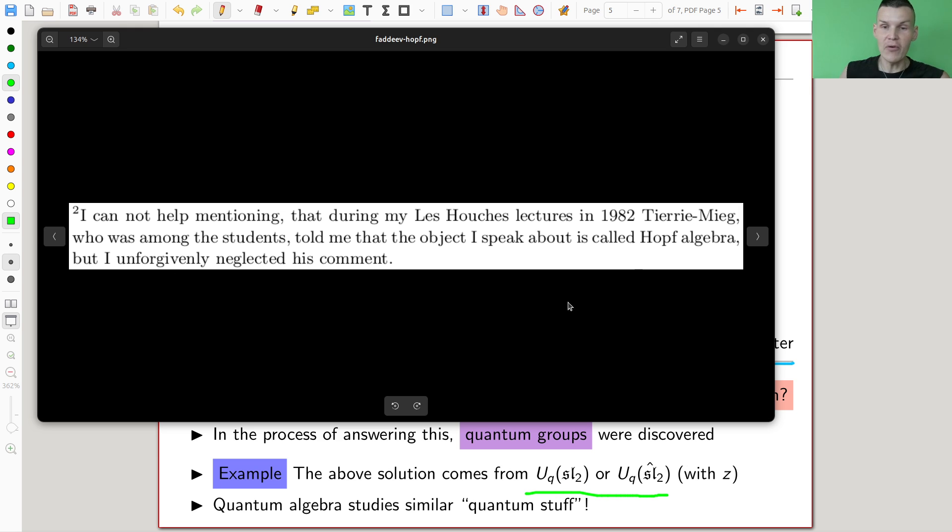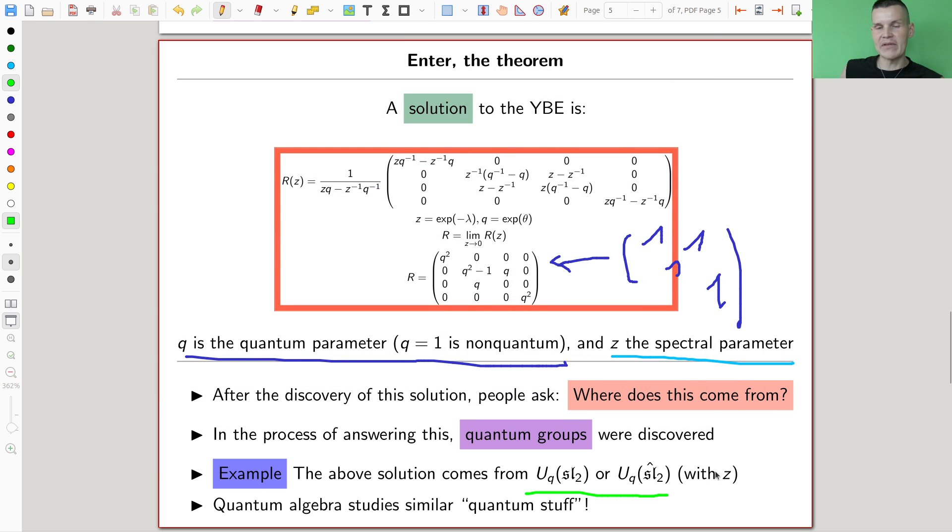And one of the students came to Fadeyev and said, oh, by the way, the thing you're talking about is actually a Hopf algebra. And Fadeyev was like, at least that's how it sounds like, Fadeyev was like, ah, a student has no idea what they're talking about. So I ignore that. Anyway, so the notion of a quantum group was actually older than the notion of a Hopf algebra, but nowadays people mostly identify the two as one. But people didn't know what that is. And in 1982, if nobody tells you what a Hopf algebra is, where should you get that from? You can't ask Dr. Google anyway. So people discovered quantum groups coming from this idea.